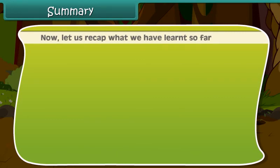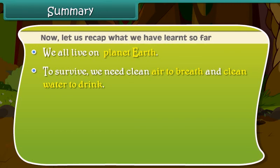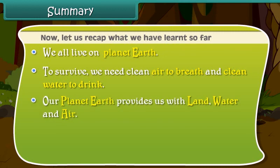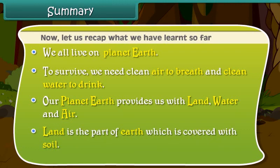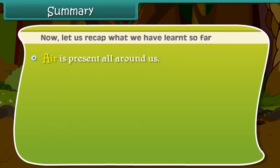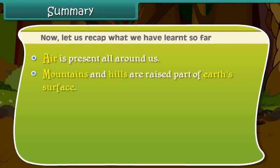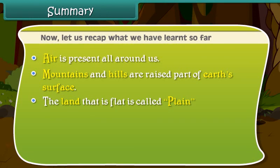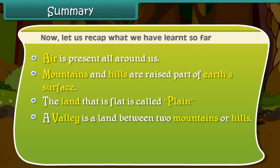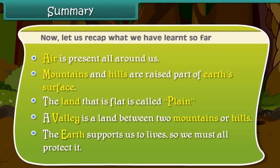Now let us recap what we have learnt so far. We all live on planet Earth. To survive, we need clean air to breathe and clean water to drink. Our planet Earth provides us with land, water and air. Land is the part of Earth which is covered with soil. Air is present all around us. Mountains and hills are raised parts of Earth's surface. The land that is flat is called a plain. A valley is a land between two mountains or hills. The Earth supports us to live, so we must all protect it.